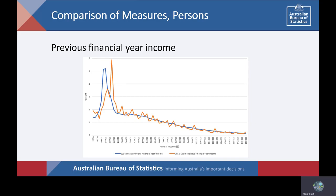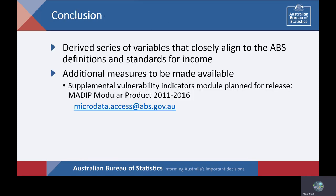Despite the differences in the peaks of the distribution, the average measures of income compare relatively well between the census and SIH measures for both mean and median incomes. Overall, the three experimental measures developed for additional income topics for the 2016 census using integrated administrative data compare relatively closely to similar measures from the SIH. They are considered fit for analytical purposes and will be made available for access in the MADIP modular product. A supplemental vulnerability indicators module containing these derived income measures is intended for release before the end of this year.